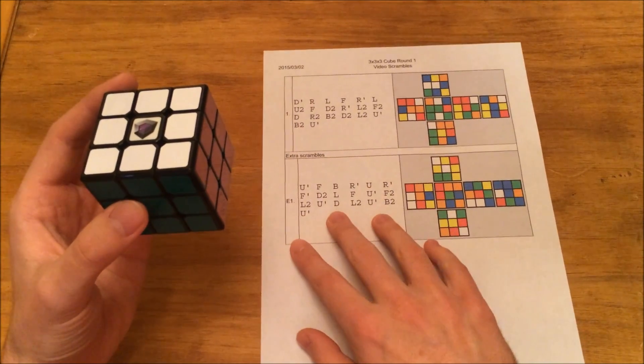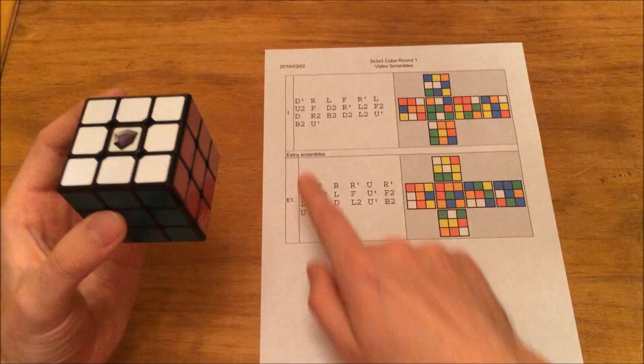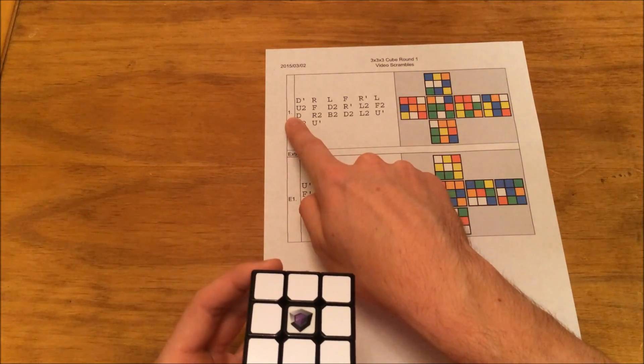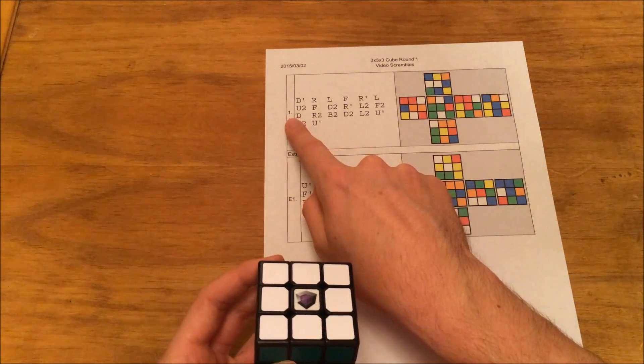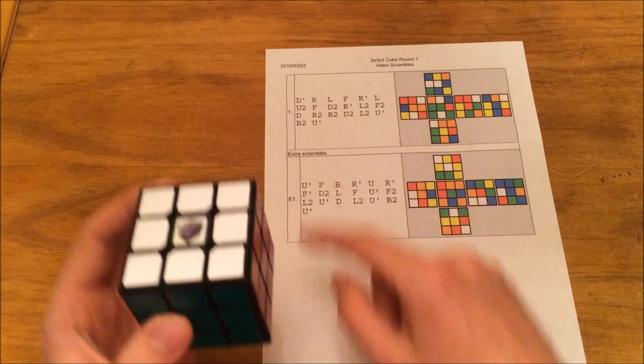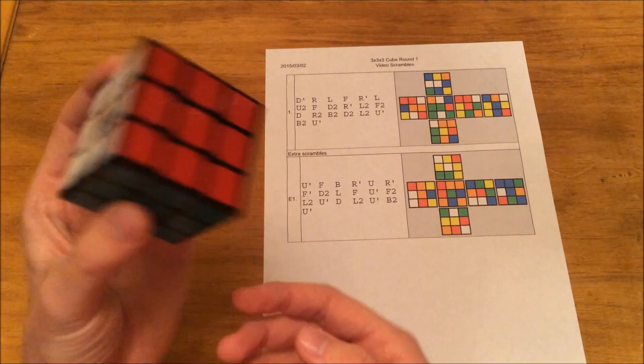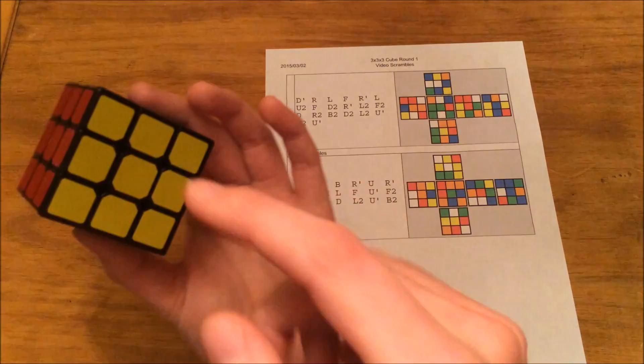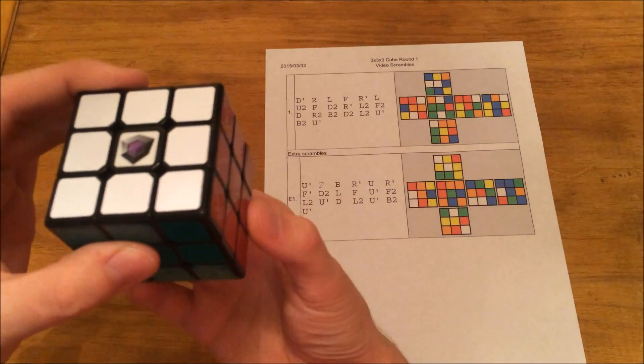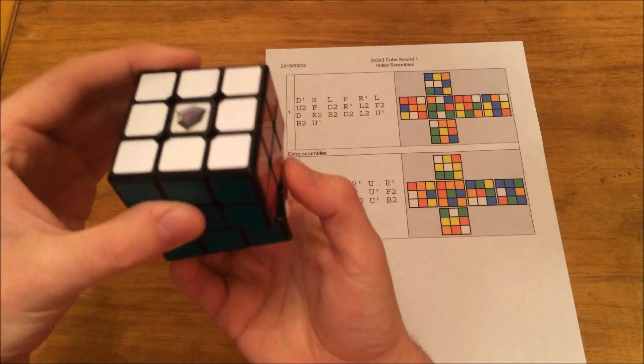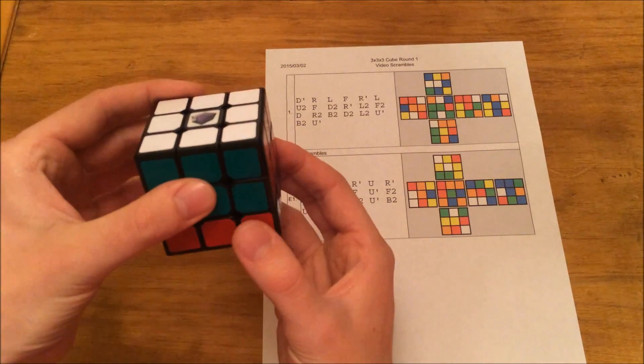So the first one is a D followed by an apostrophe. That is D prime. You'll notice that this says it's scramble number one. I'll cover that in a different video. So the first move is a D prime. So that's going to be a counterclockwise turn. I'll imagine I'm looking directly at the down face and turn it counterclockwise. Here, I'll do that better. There we go. Counterclockwise.